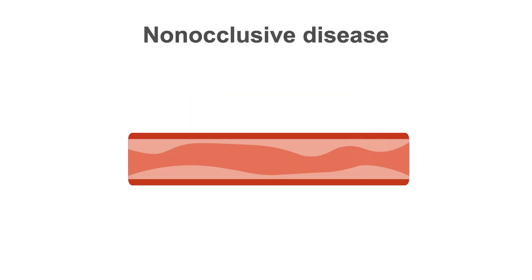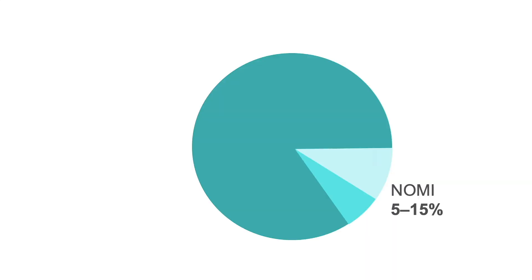Non-occlusive mesenteric ischemia, or NOMI, develops when delivery of oxygen and nutrients to the bowel is insufficient for cellular metabolism, but there is not a complete occlusion of the blood flow. NOMI accounts for 5-15% of patients with acute mesenteric ischemia.